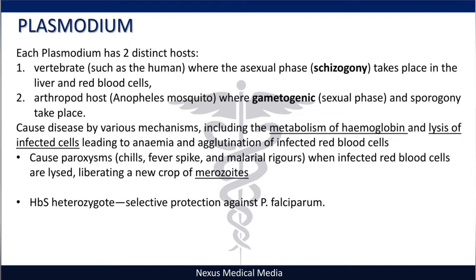People with sickle cell anemia have selective protection against Plasmodium falciparum — some texts suggest malaria in general. There are also Duffy blood group antigens, which have receptors for Plasmodium vivax.